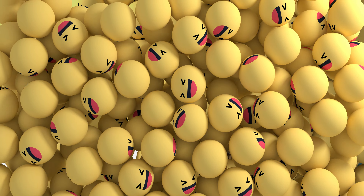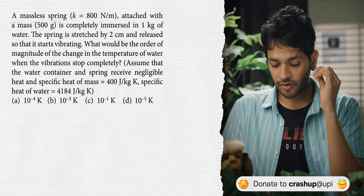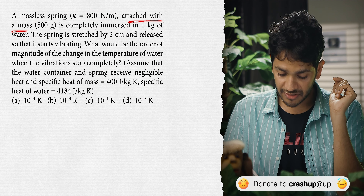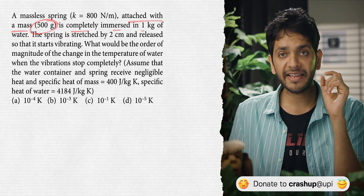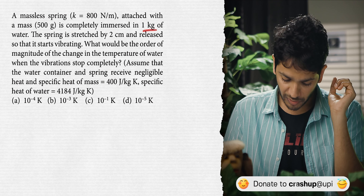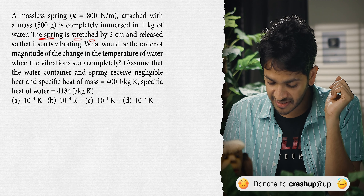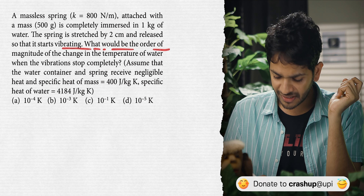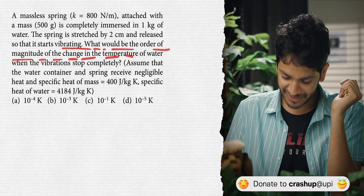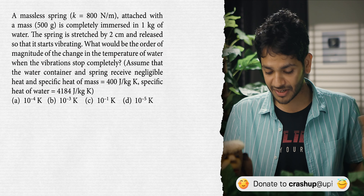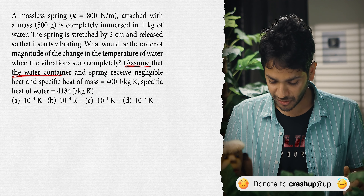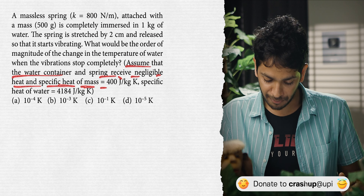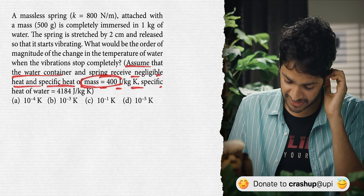A massless spring of spring constant k = 800 N/m, attached with a mass of 500 g, is completely immersed in 1 kg of water. The spring is stretched by 2 cm and released so that it starts vibrating. What would be the order of magnitude of the change in temperature of the water when vibration stops completely? Assume the water container and spring receive negligible heat. Specific heat of mass and water are given.